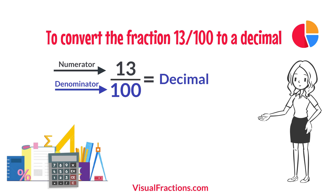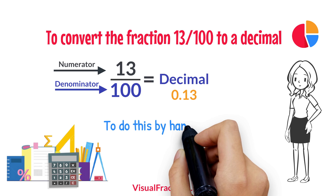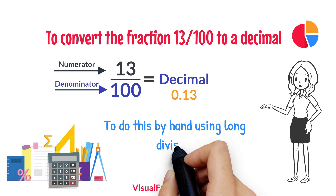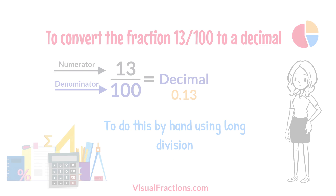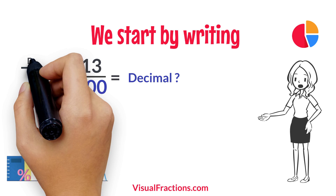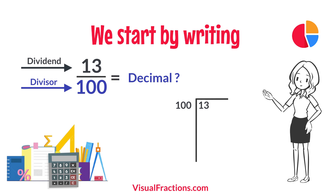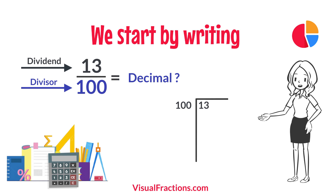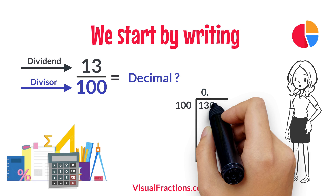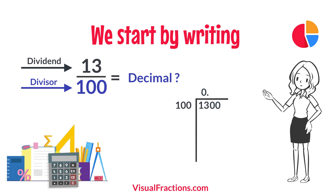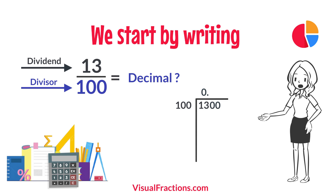The answer we get is 0.13. To do this by hand using long division, we start by writing 13 as the dividend and 100 as the divisor. Since 100 doesn't fit into 13, we add a decimal point in our answer and append two zeros to 13, making it 1300.